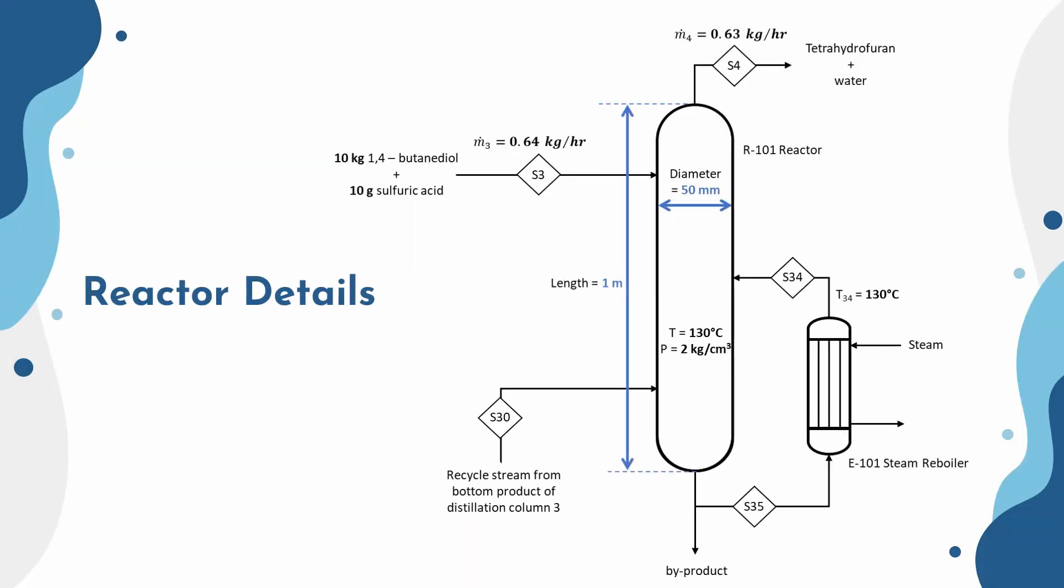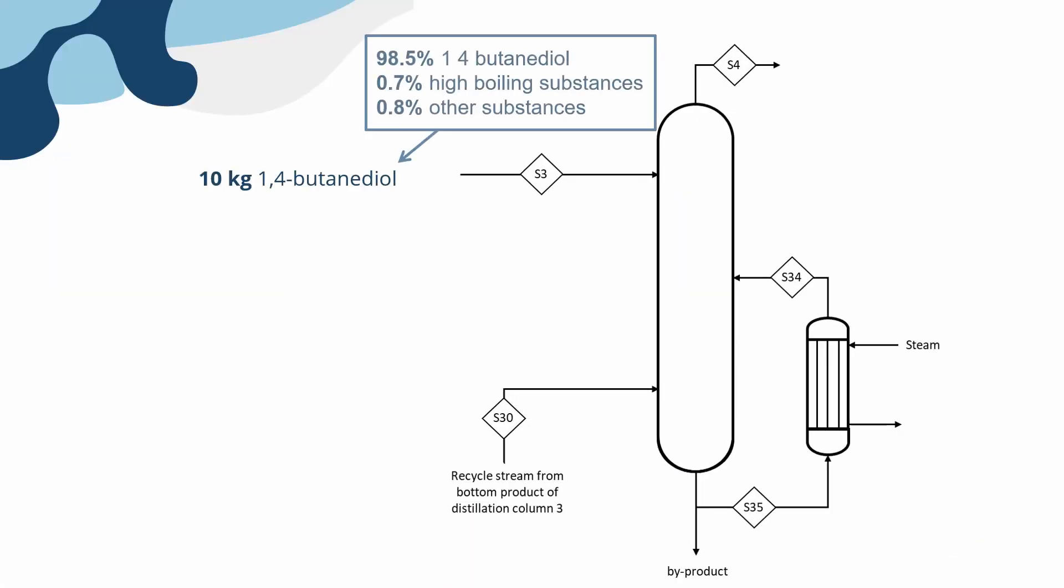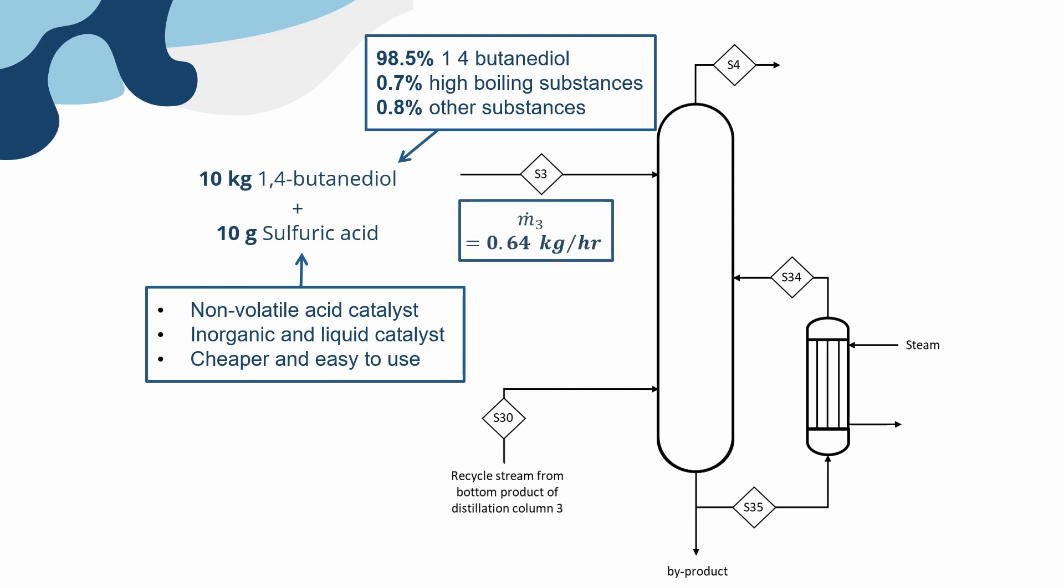Reactor details: 10 kg of 1,4-butanediol that contained 98.5% of 1,4-butanediol was mixed with 10 grams of sulfuric acid and fed into the reactor through stream 3 at 0.64 kg per hour.